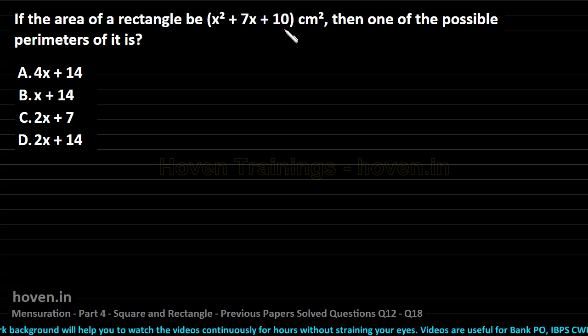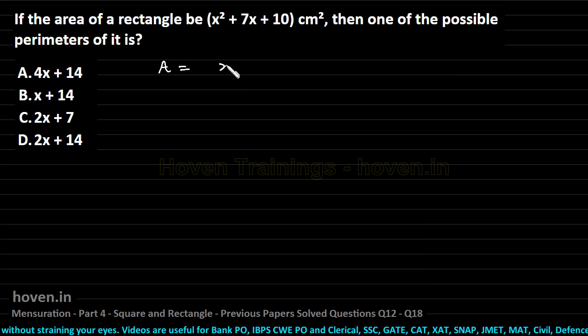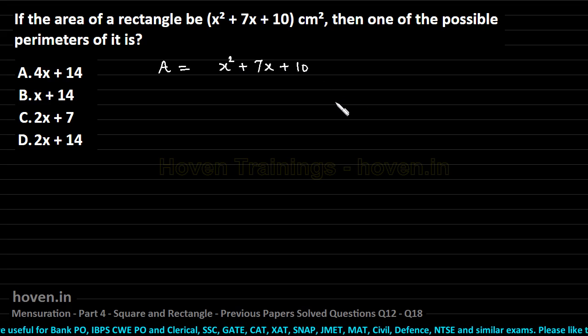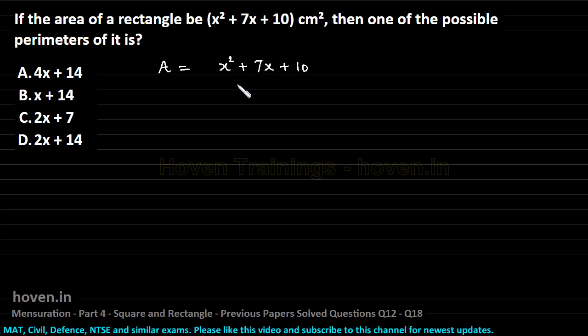Now, this is the area that has been given to us. We can write A is equal to x square plus 7x plus 10. This is what has been given to us and we are expected to find out the perimeter.